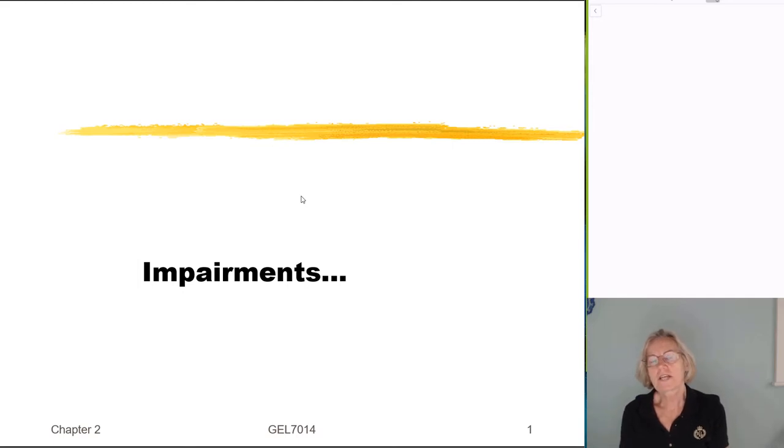So we have one more general topic to cover before we dive into some of the specifics of what we're going to be studying in Chapter 3. And so one of the last topics from Chapter 2 is, in general, where do impairments come from for a digital communications signal?